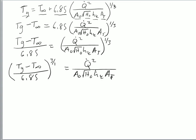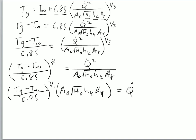And now we're going to take everything that is in the denominator on this side and multiply it across to the other side. So I have the temperature of the gas layer minus the ambient temperature divided by 6.85 raised to the 3 over 1 power, multiplied by A naught square root H naught h sub K area total is equal to heat release rate squared.